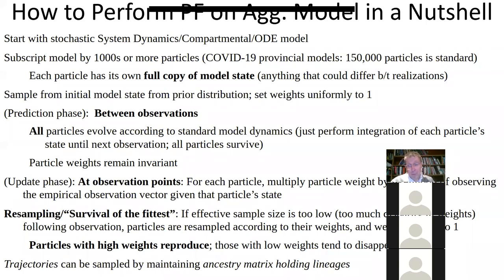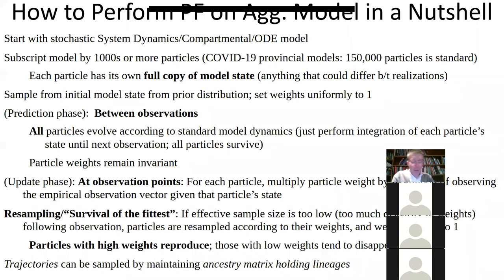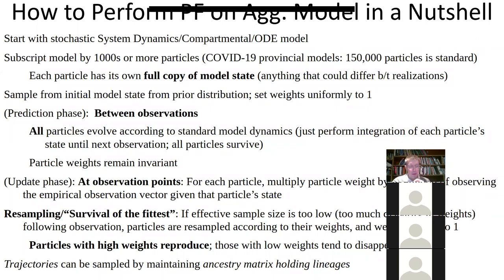Now there are a lot of particles. For the province and for PHAC and FNIB, we basically have about 150,000 particles per model — a lot of competing hypotheses, a lot of them jockeying to best explain the data. In general, the bigger the model, the more stocks, the more particles you need to have different views about all sorts of different things about the model.